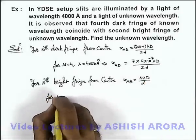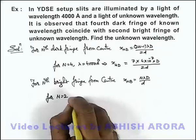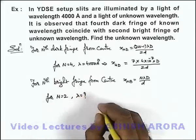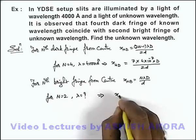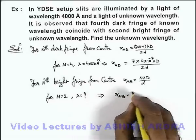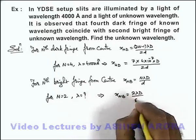And here for n=2, the value of lambda we are required to calculate. This implies the value of x_nb we are having 2λD/d.